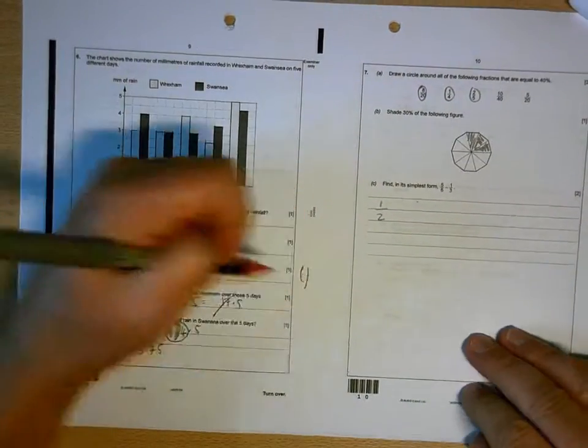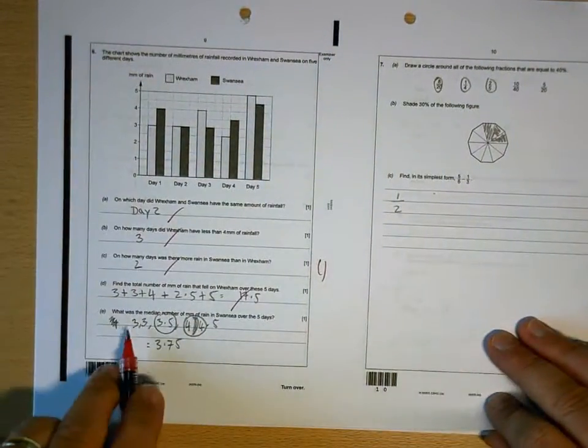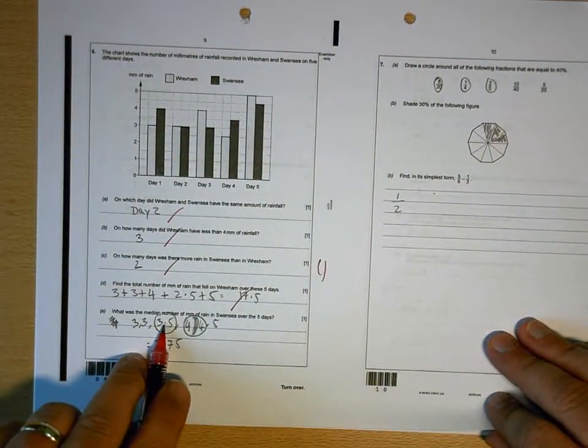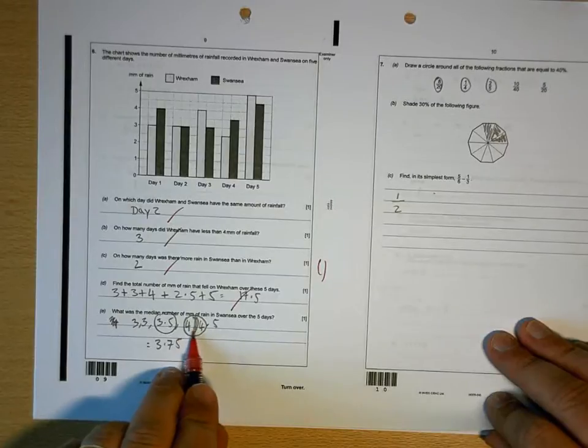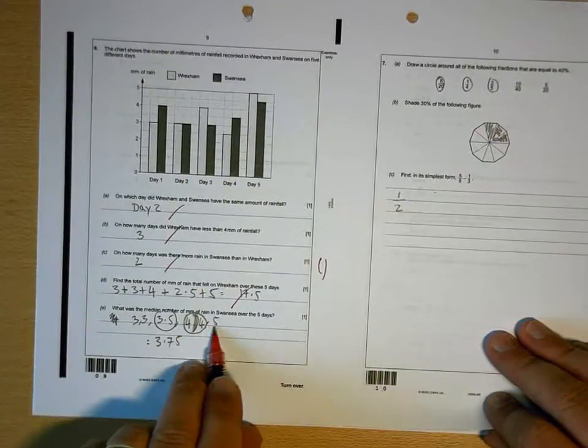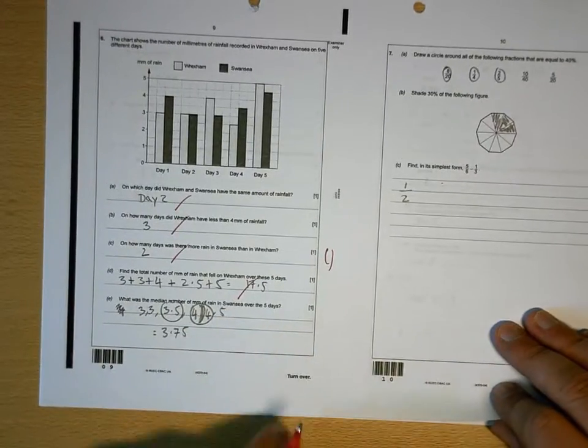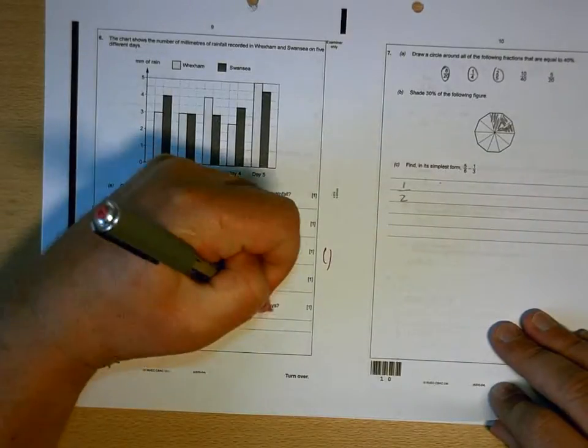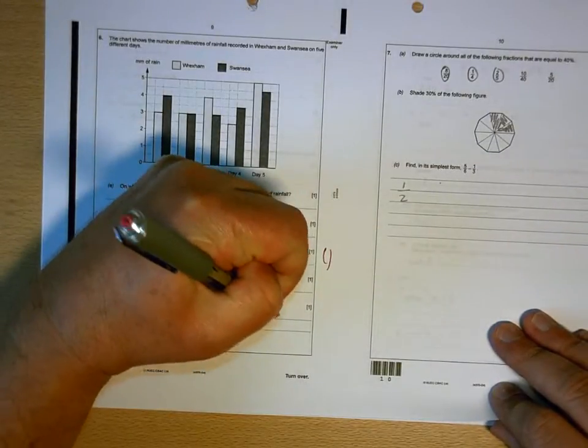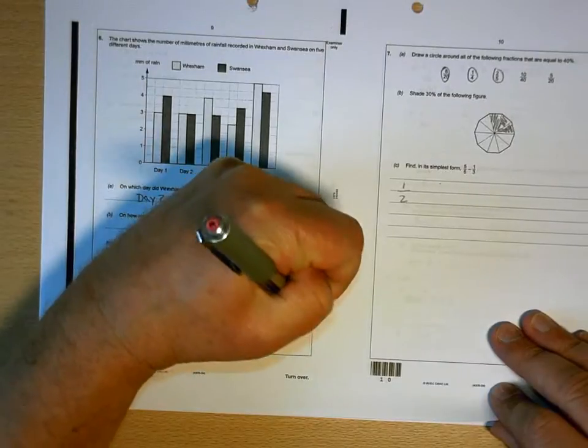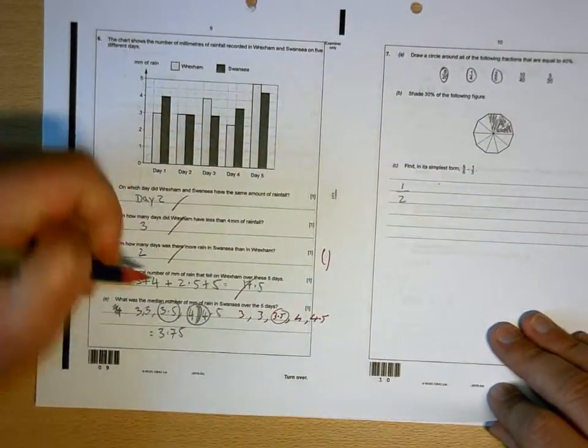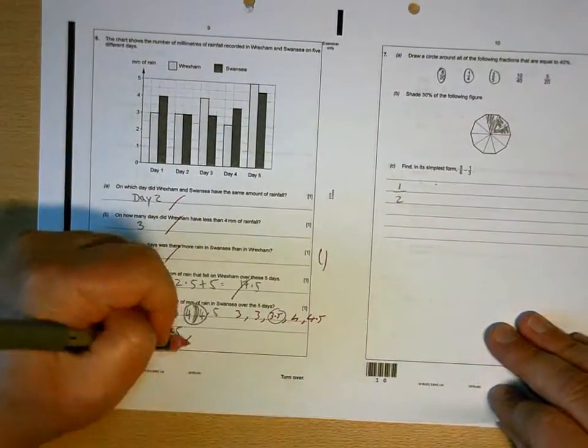So those are all right. This one's wrong, because you've got 1, 2, 3, 4, 5. You've confused yourself there. 4.5 is a day in its own right. So it should have been 3, 3, 3.5, 4, 4.5. So the middle one is 3.5.